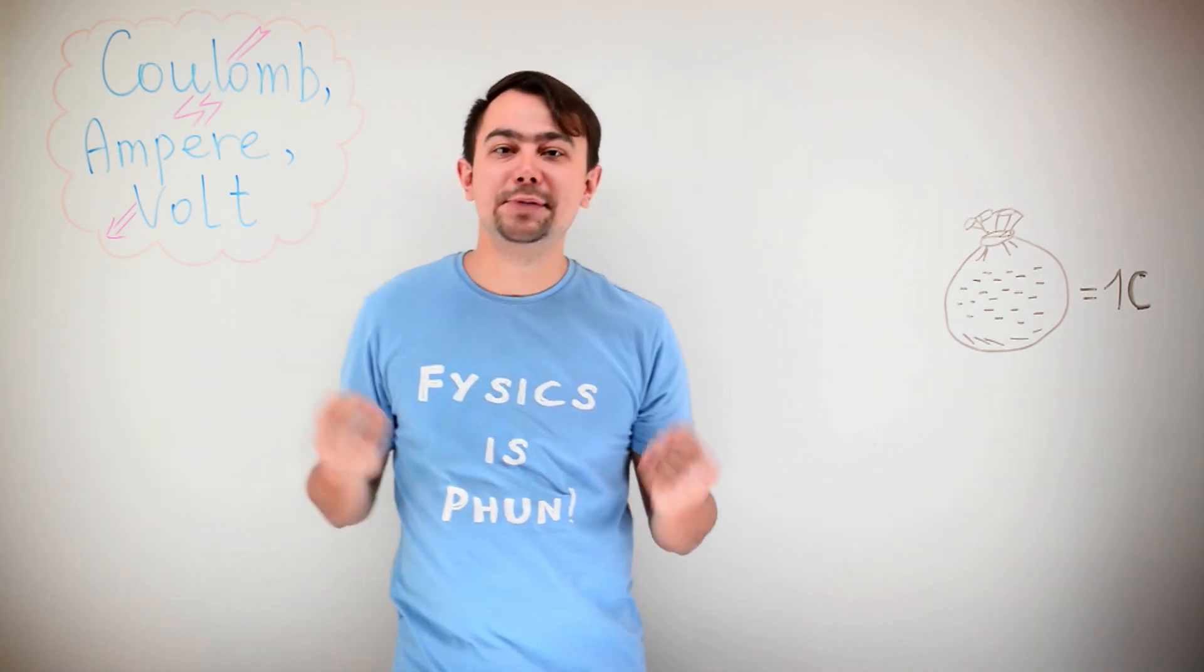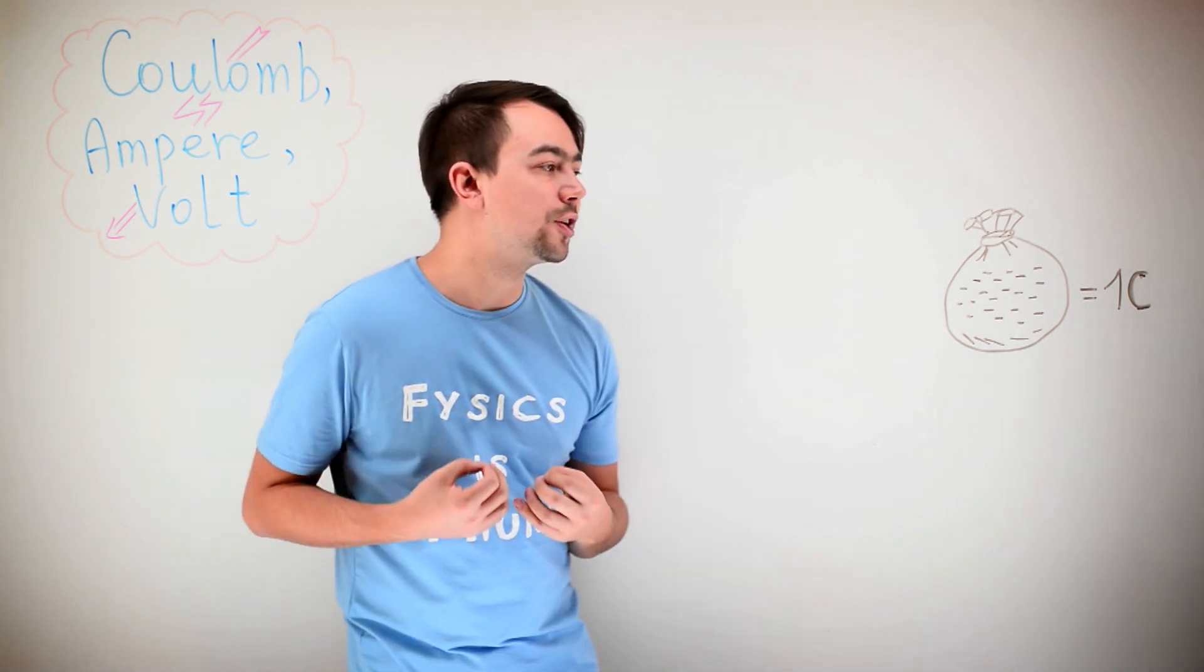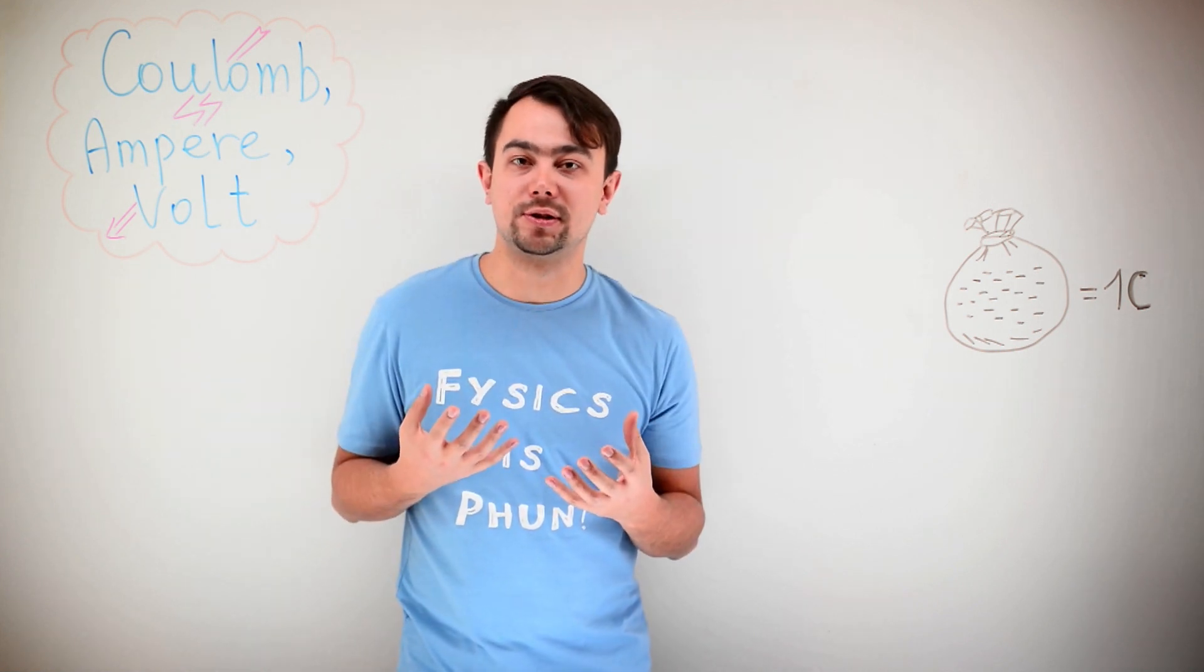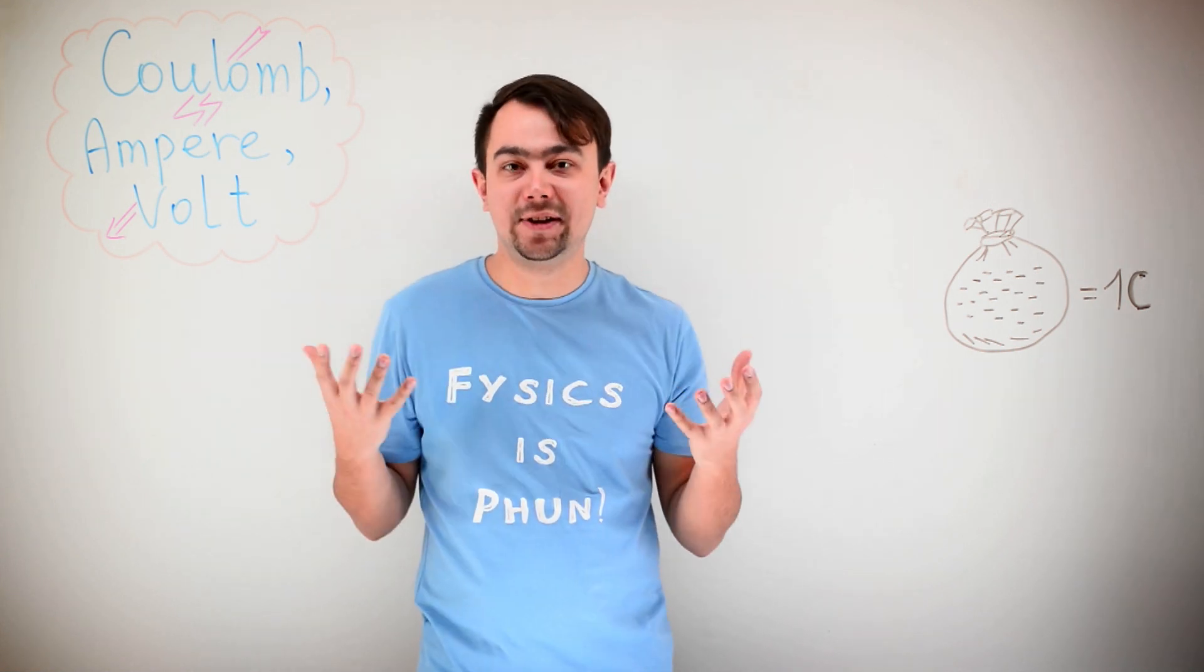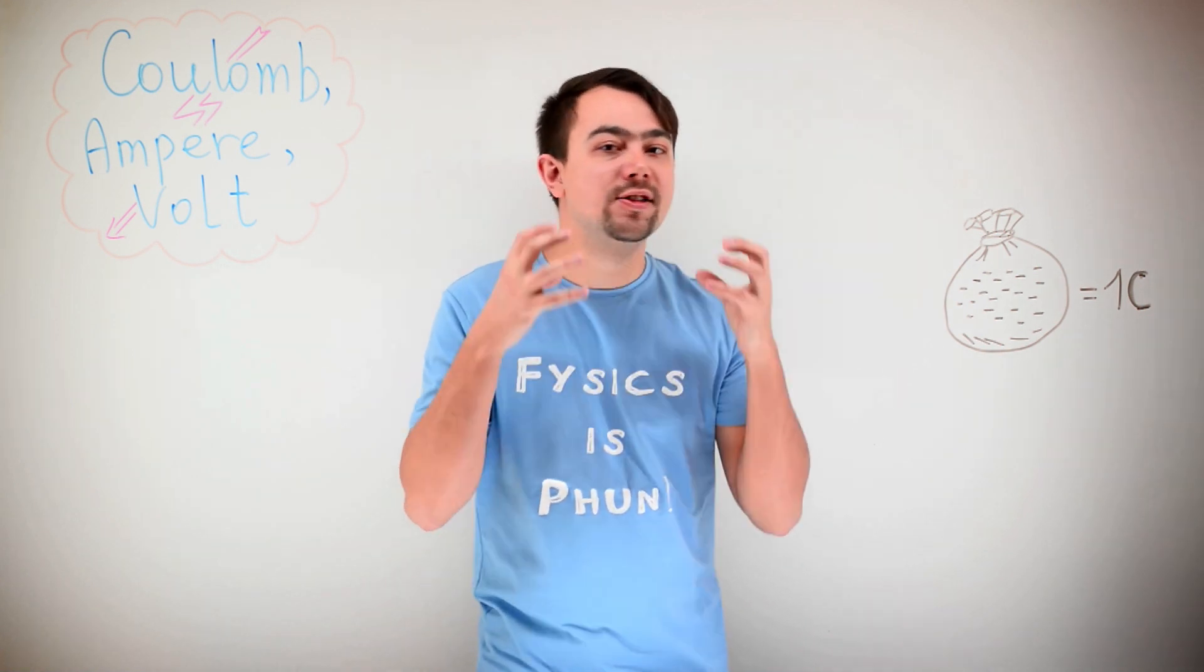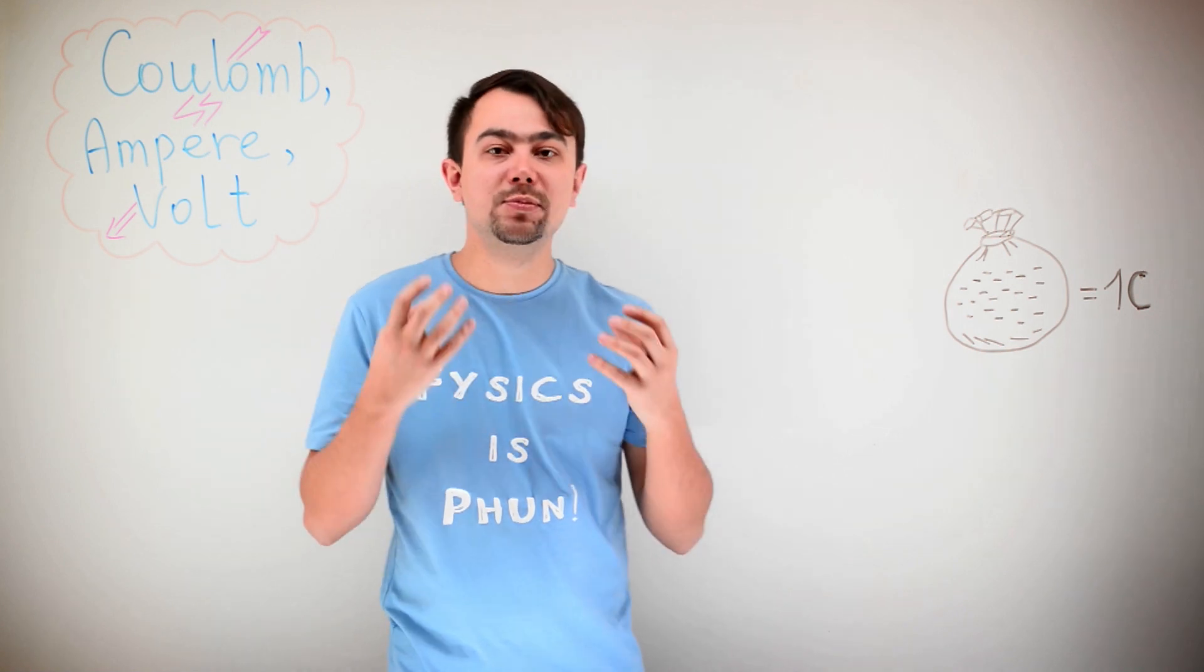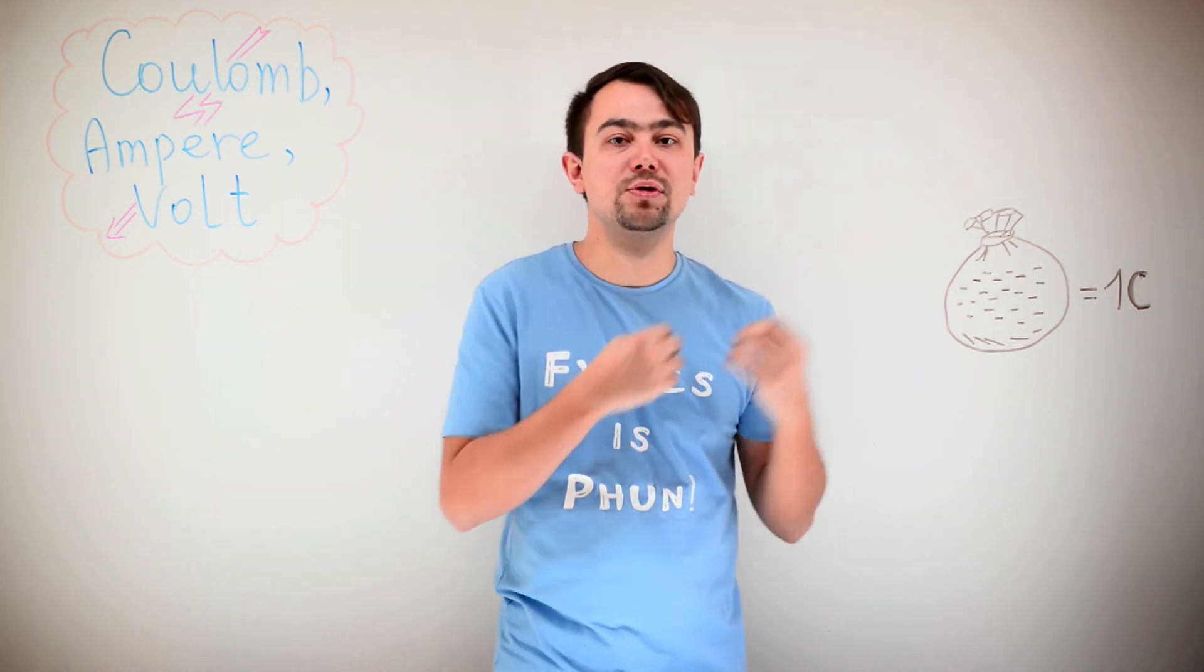As we already know, electrons carry a negative charge. The positive charge is carried by the protons. But the protons are heavy, and they are stuck neatly inside the nucleus. They don't move much. So, when we say charge is moving, we usually mean that the electrons are moving.